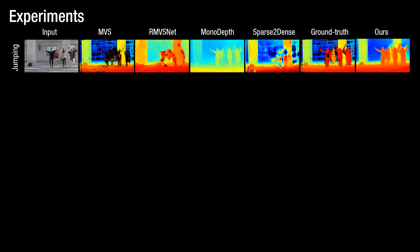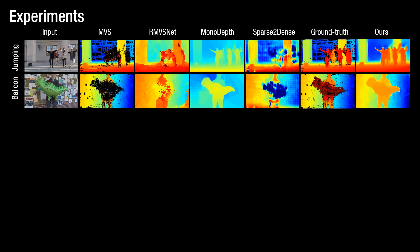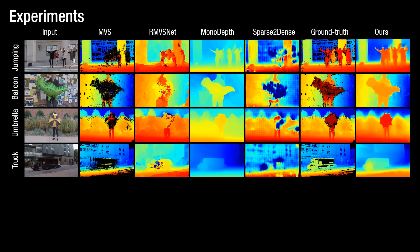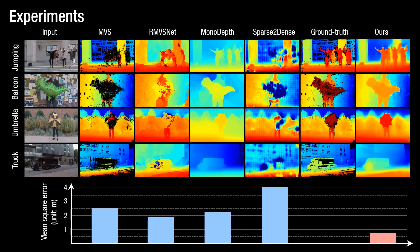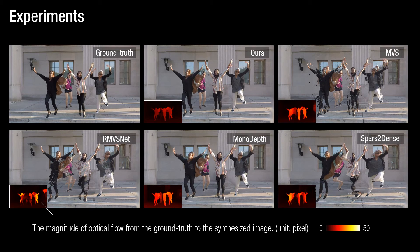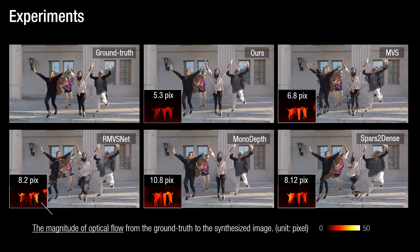We tested our method on various dynamic contents such as humans, balloons, umbrella, and truck. On average, our method outperforms existing depth estimation methods using the metric of mean square error. More importantly, this accurate depth allows us to synthesize images in a geometrically consistent way. To measure such geometric consistency, we evaluate the view synthesis result based on the magnitude of optical flow from the ground truth to the synthesized image. On average, our method has the least flow error, meaning it is the best at producing a novel view in a geometrically consistent way.